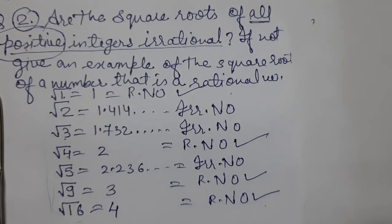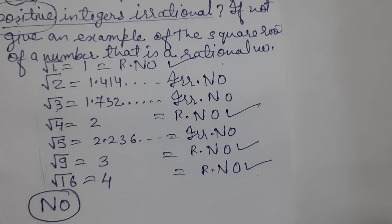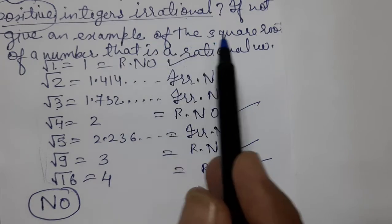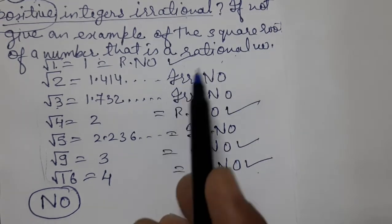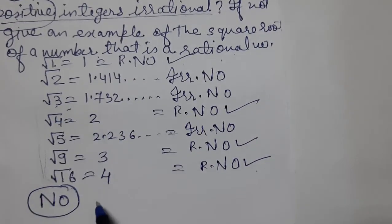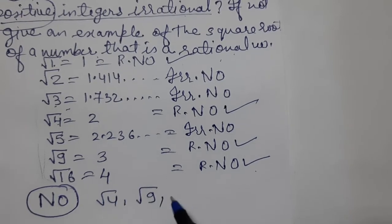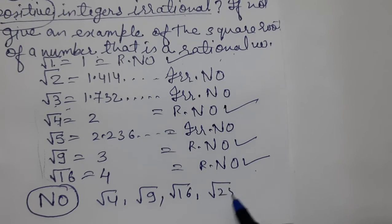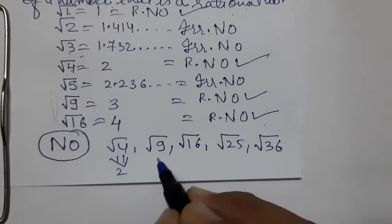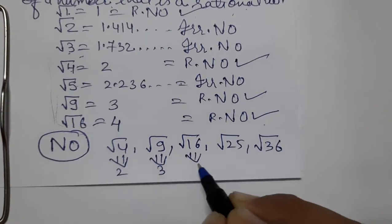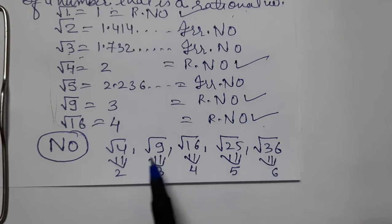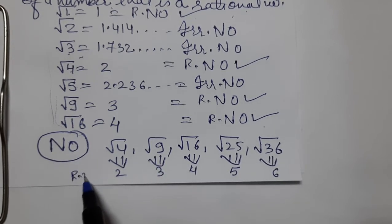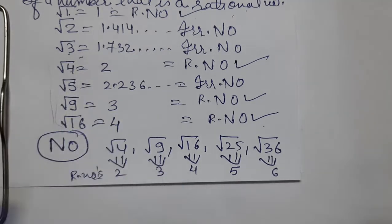The answer is NO — not all square roots of positive integers are irrational. Examples of square roots that are rational numbers: √4, √9, √16, √25 — these are all rational numbers.